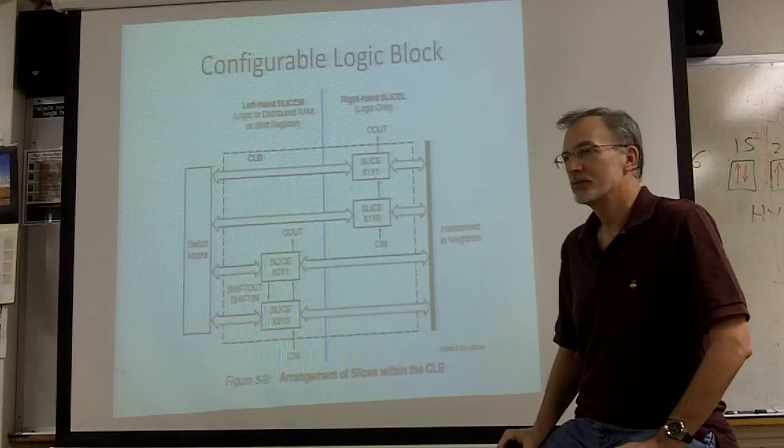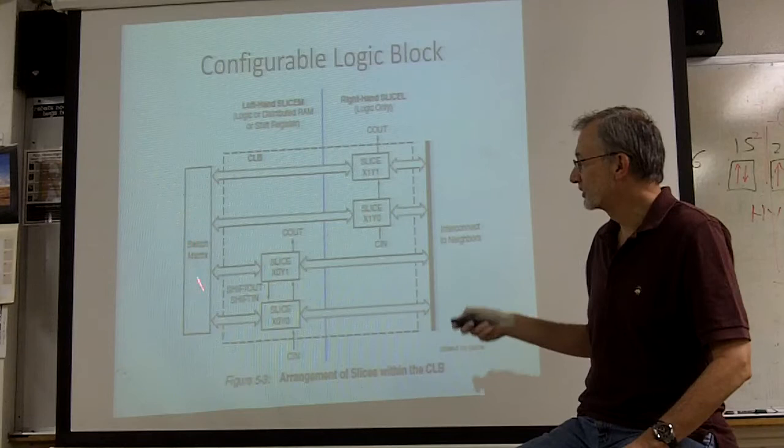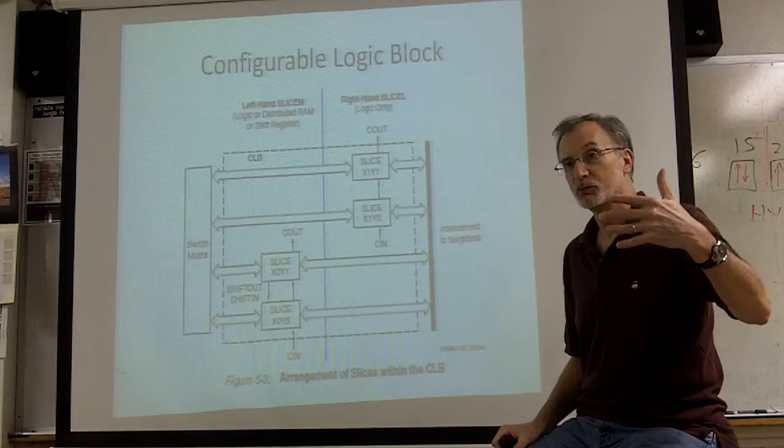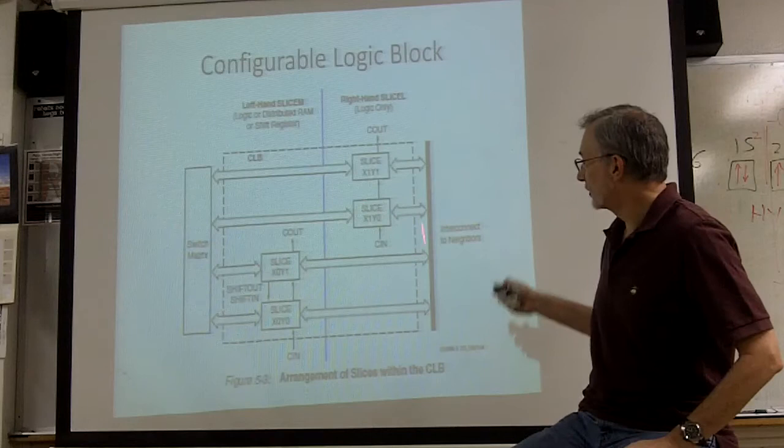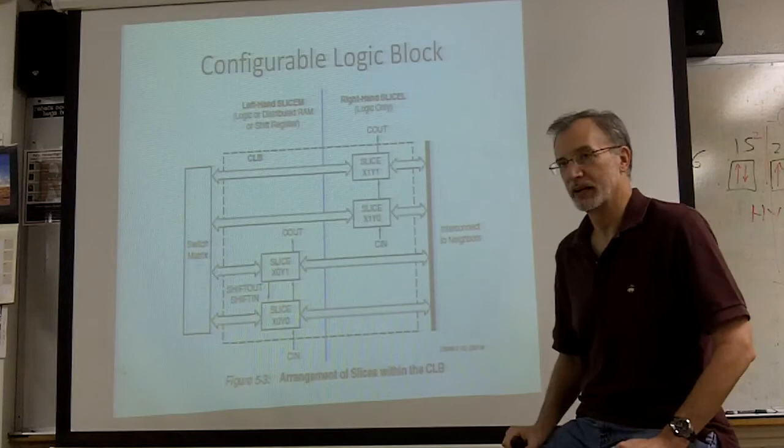Each configurable logic block consists of four slices. Each slice within each CLB is associated with a switching matrix, which allows the I/Os from that individual block to go up into the routing network and then be routed around the chip. In addition, there are much simpler interconnects that go immediately to the nearest neighbor, so if you have several configurable logic blocks that are simply connected, output of one to the input of the next, that can be done with local interconnect that just simply goes from one block to its neighbor.